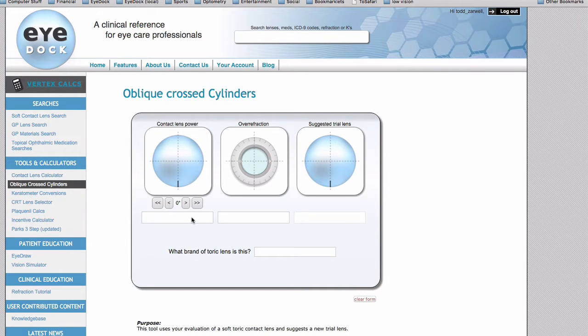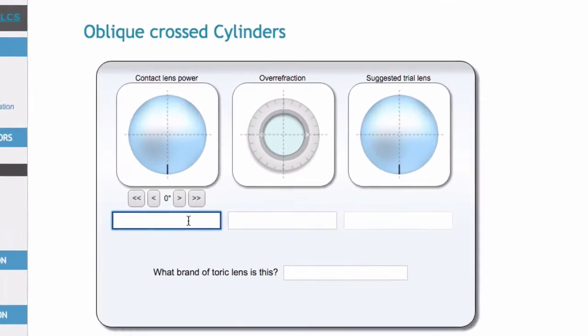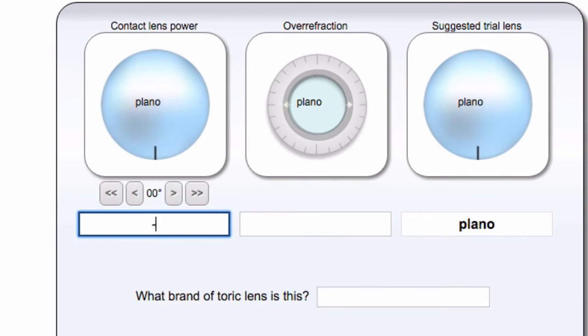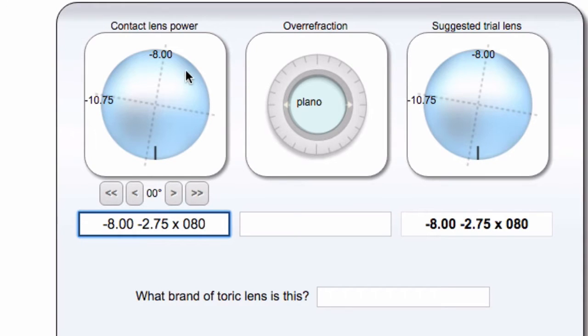You first of all type in a contact lens power in this first box. So if I'm working with a contact that's minus 8, minus 2.75 axis 80, you can just type that in, and as you go, it will automatically parse the information and put the powers on the meridians on the optical cross on the contacts.